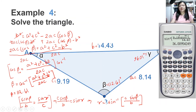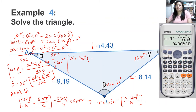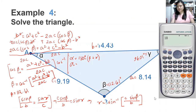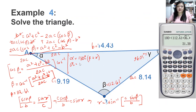Now we only need to get alpha. Alpha will be the difference between 180 and the sum of beta and gamma. We know alpha should be the smallest angle because A is the shortest side. So alpha equals 180 minus beta plus gamma, which is 180 minus 112.61 minus 36.01, giving us alpha equals 31.38 degrees. True enough, alpha is the smallest of the three angles.